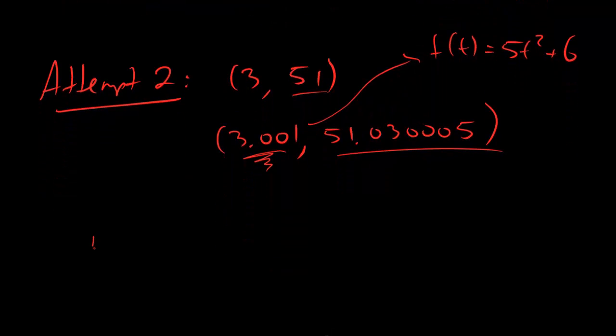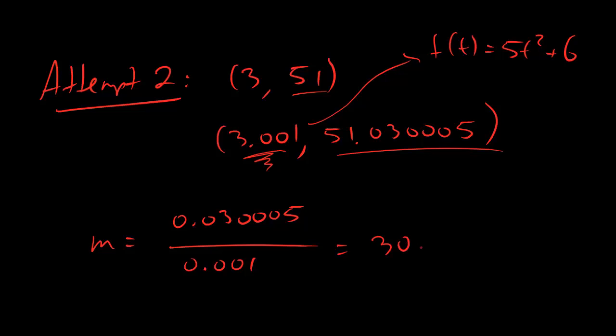All right. Now if I calculate the slope, what do I get? y2 minus y1 is 0.030005. A lot of zeros. Divided by x2 minus x1 is 0.001. Simplify this, and you end up getting 30.005.